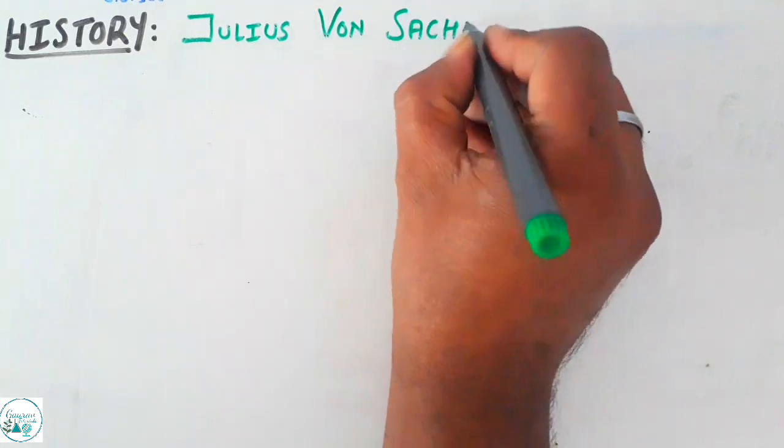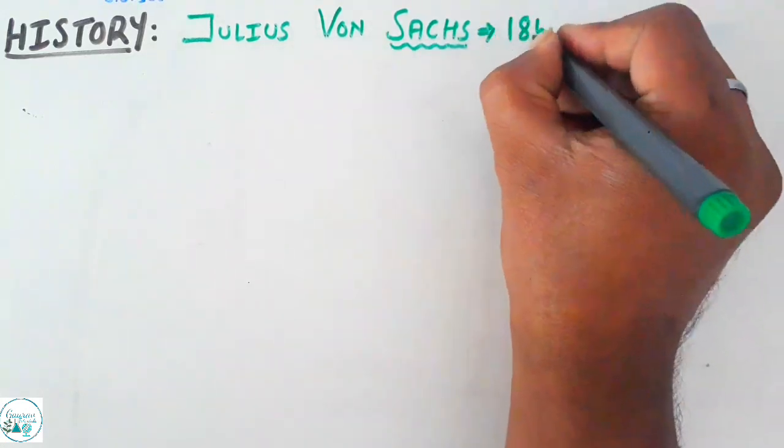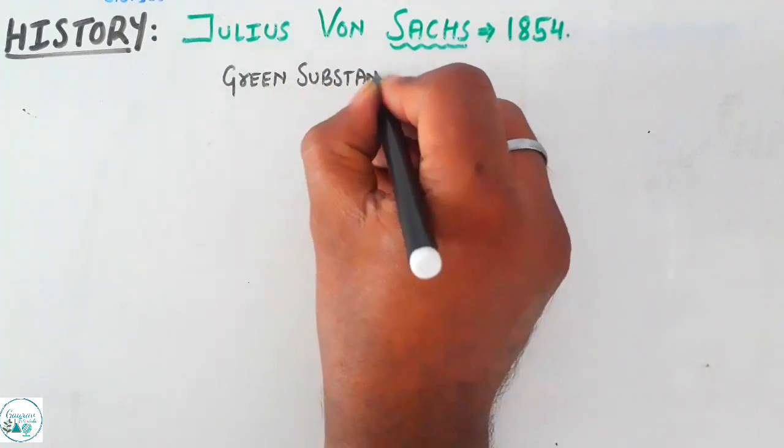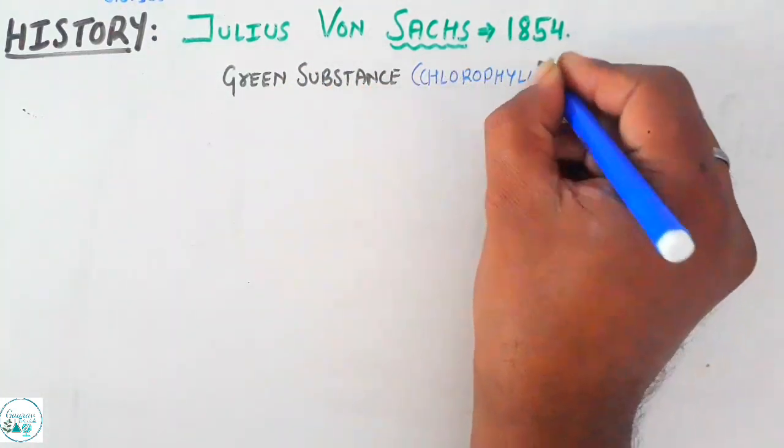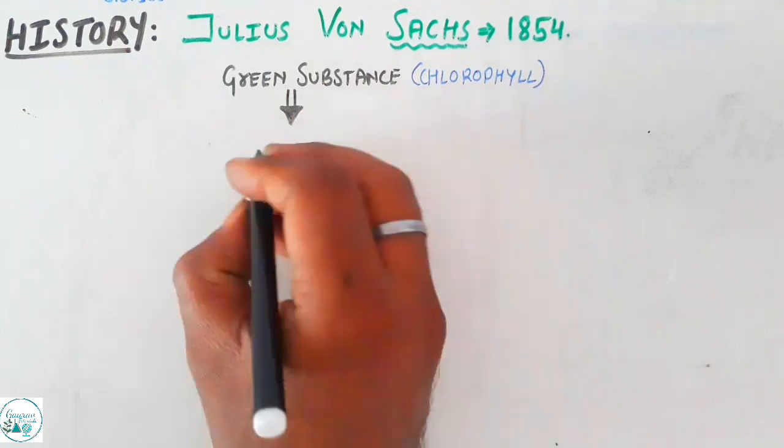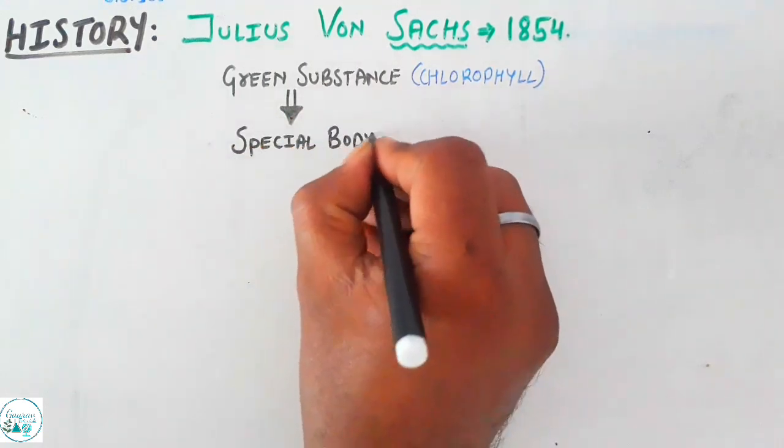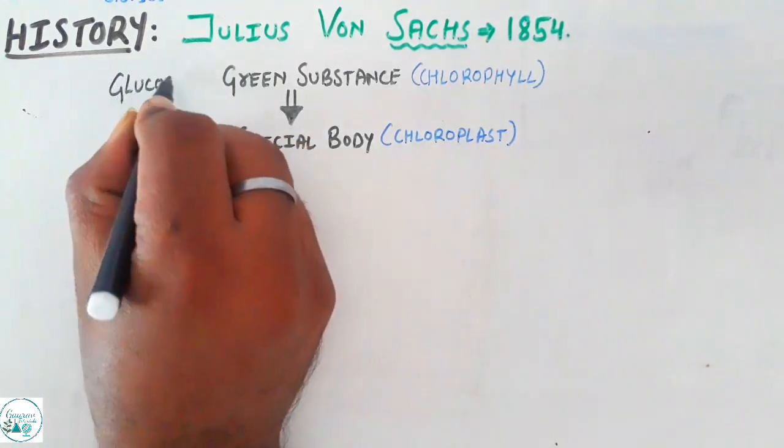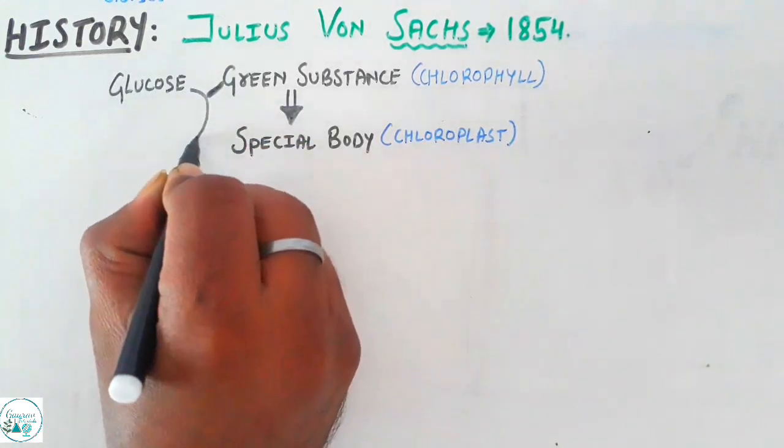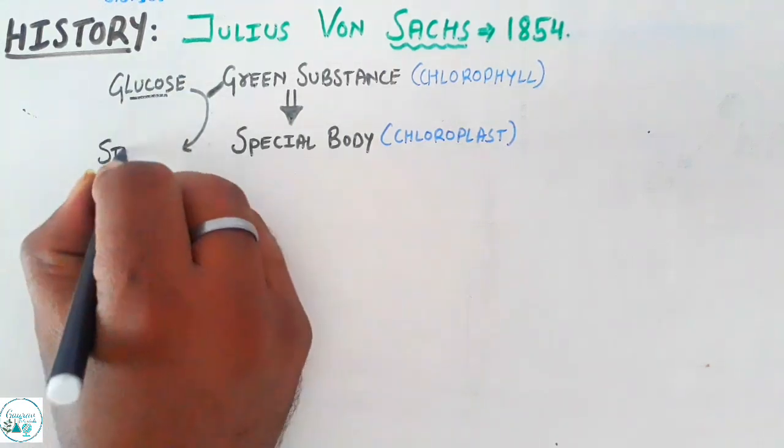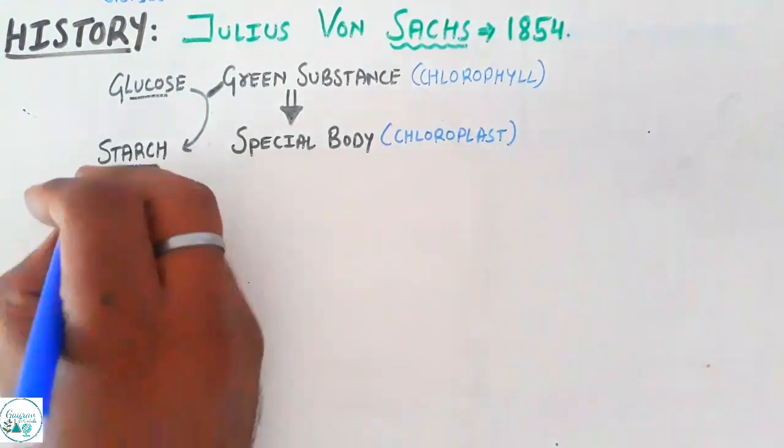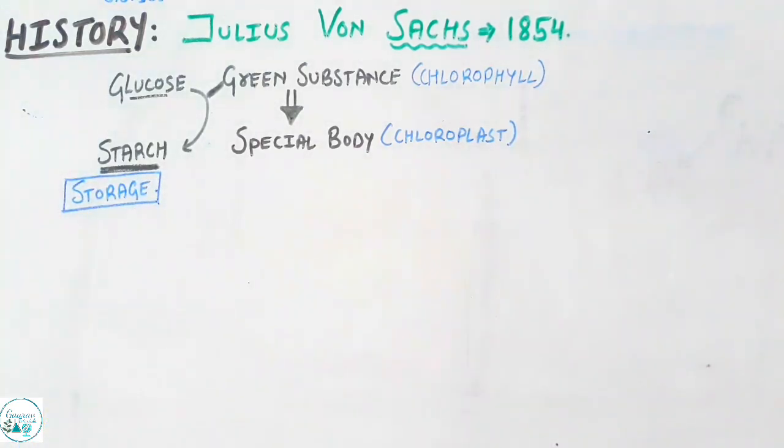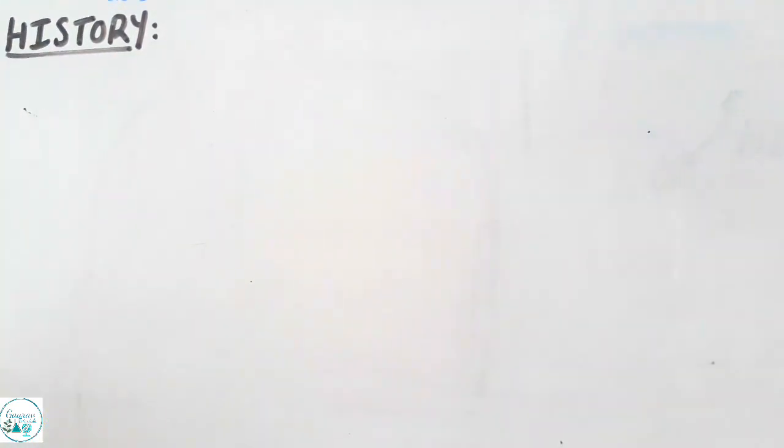The third scientist was Julius von Sachs. In 1854, Julius von Sachs observed that green substances, which are now referred to as chlorophyll, are localized in a specialized body now called chloroplasts. He also observed and concluded that the green substances are the ones which are responsible for production of glucose, and the glucose is converted and stored in the form of starch.